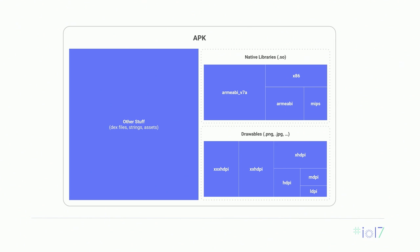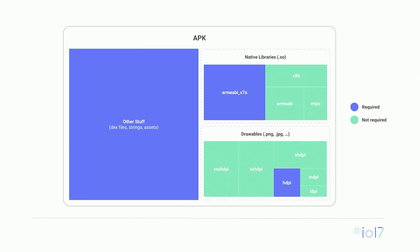Because of the diversity of devices in the Android ecosystem, developers include native libraries for different architectures — ARM, x86, MIPS, sometimes the 64-bit variants as well — and drawables for different screen densities: low density, medium density, high density, extra high, extra extra high, and so on. This is a good thing because it means that apps run at their best on each device. But the consequence is that for a specific device, a lot of the content of an APK is unnecessary. So if I have a phone with a 32-bit ARM architecture and an HDPI screen, I only need the contents of the boxes in blue, and the boxes in green are completely unnecessary for that specific phone.